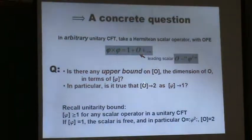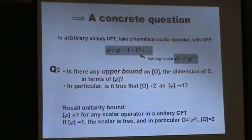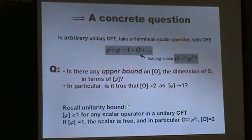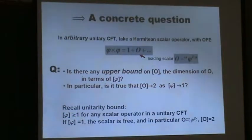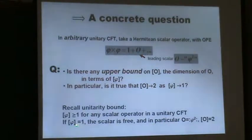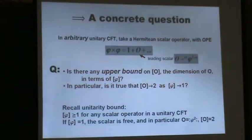In particular, is it true that if the dimension of φ approaches one, the dimension of the leading scalar is forced to approach two? If so, depending on the numerical significance of this behavior, it could rule out the idea of conformal technicolor. Recall the unitarity bounds, which are lower bounds: in any unitary CFT, all scalar operators have dimension necessarily greater than one, and if the dimension is exactly one then the field is a free field. In the free theory we know the OPE — it's φ squared with dimension exactly two. So as the dimension of φ approaches one, does the character of the problem necessarily reassert itself, and how early does that happen?